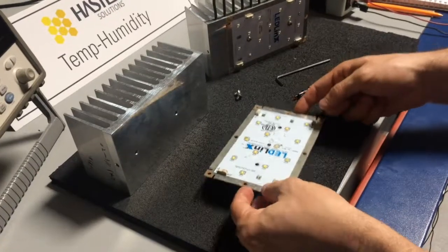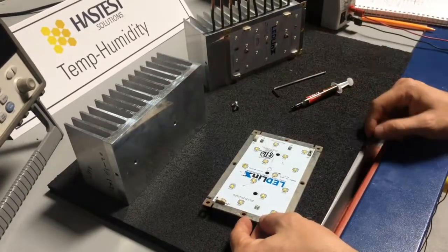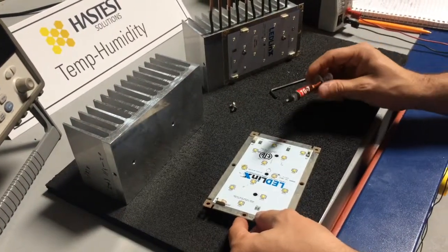To install the LED panel, we have to make sure that the surface is clear. Then we apply the thermal grease.